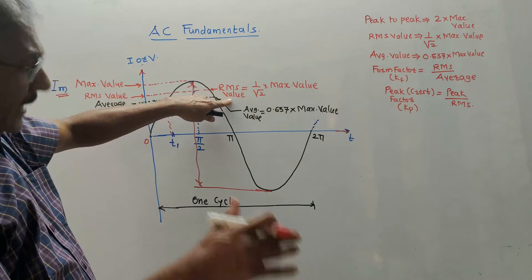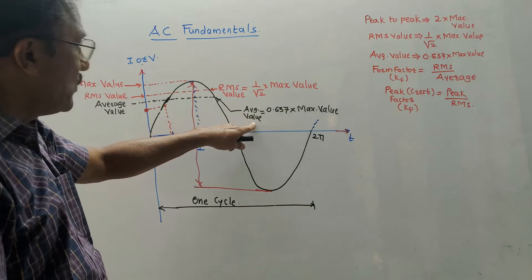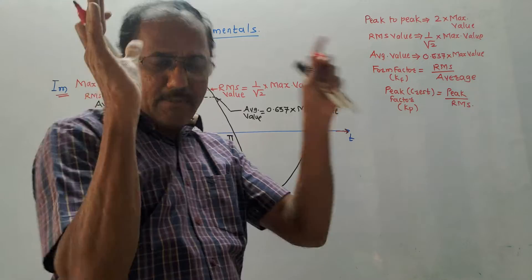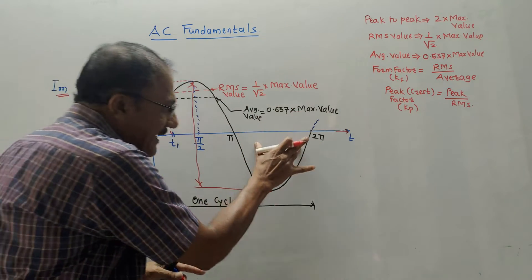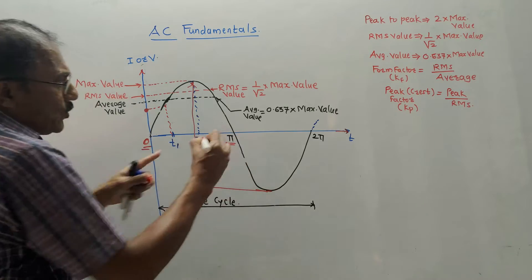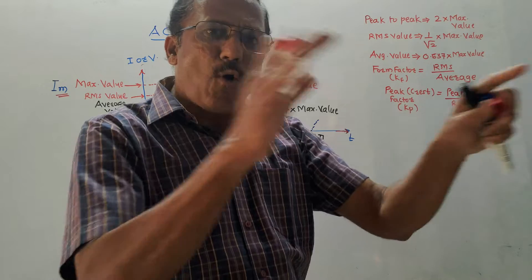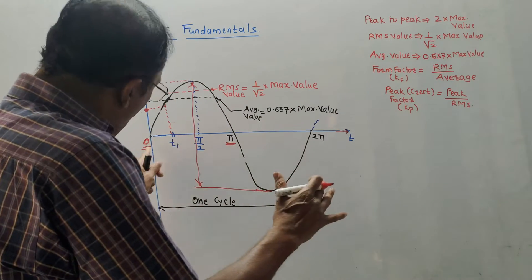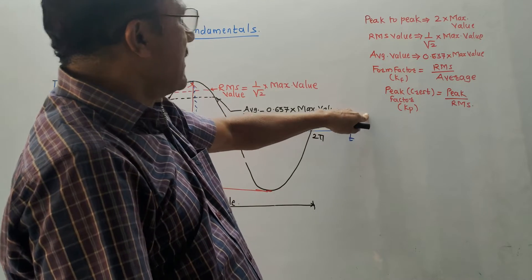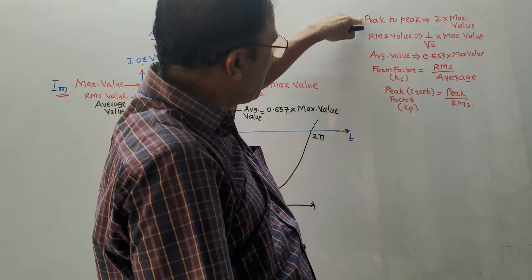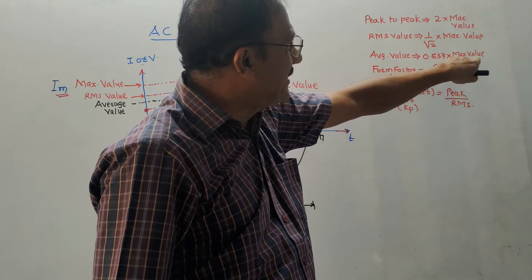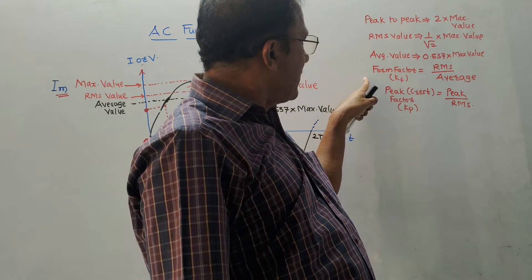The RMS value is measured over one complete cycle — both positive and negative half cycles. The average value is measured only for a half cycle, say from 0 to π. It is the average of all values along one half cycle. The average value equals 0.637 times the maximum value, and the peak-to-peak value is two times the maximum value.